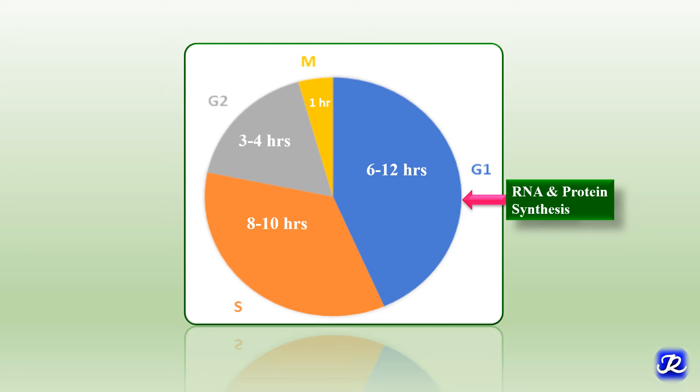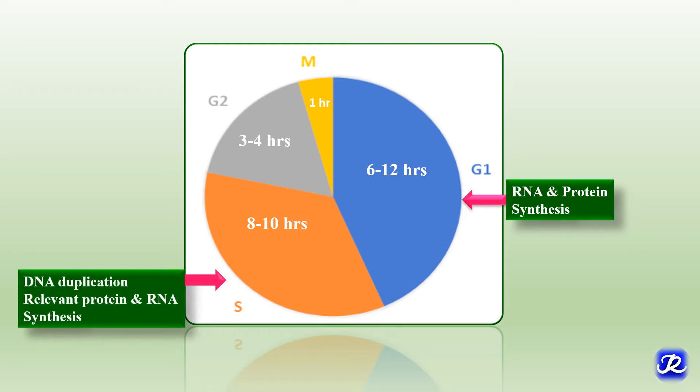S phase is called the synthetic phase and it commences with the start of DNA synthesis. During this phase, the entire DNA is replicated only once. RNA synthesis and translation is very slow, and this phase lasts for 8 to 10 hours.